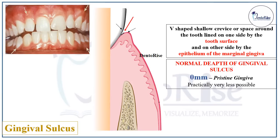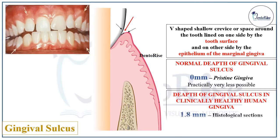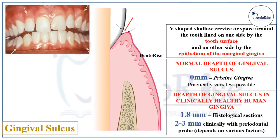The depth of gingival sulcus in a clinically healthy human gingiva, according to histological sections, should be 1.8 mm. However, clinically, if checked with a periodontal probe, it is roughly 2–3 mm, and that too depends upon various factors — for example, the force of probing.